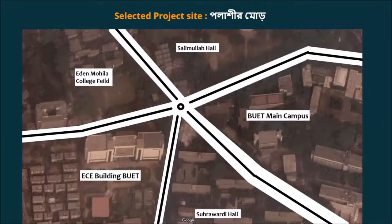In the bottom left corner, we can see our ECE campus in the west side of Polashi. In this side, we have our BUET main campus. We have Salimullah Hall and Eden Mohila College on the top, and our Suhrawardy Hall in the south side.